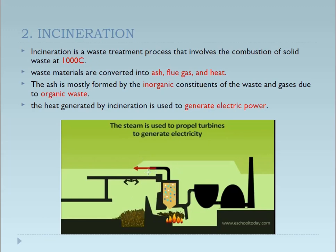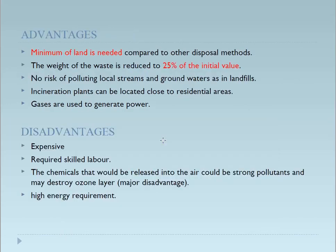Here you can see how steam is used to propel turbines to generate electricity — these things can be done by incineration. The advantages: minimum land is needed compared to other disposal methods. The weight of waste is reduced to 25% of the initial value. There is no risk of polluting local streams and groundwater. Incineration plants can be located close to residential areas since no landfills are required, though air pollution problems remain. The gases generated are used to generate power.